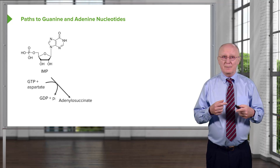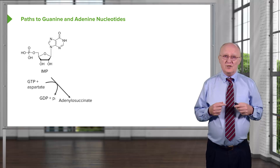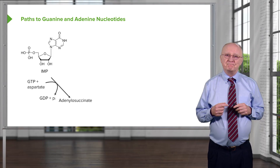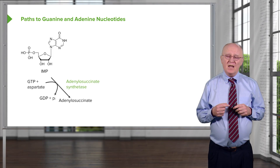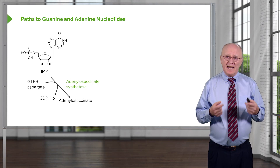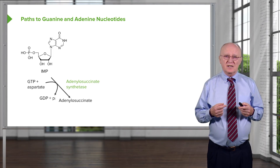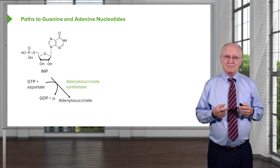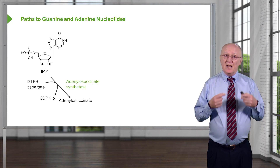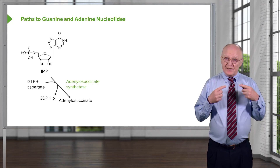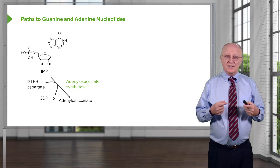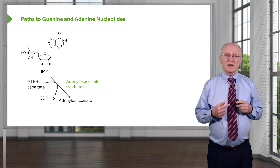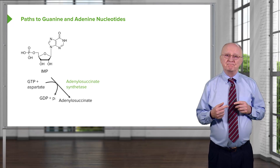We'll see the same thing happens with GTP synthesis. The enzyme catalyzing this reaction is adenylosuccinate synthetase, and we'll see later that this is an important enzyme in controlling the amount of adenosine nucleotides being made.